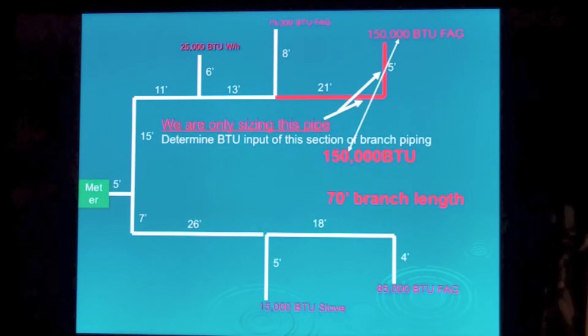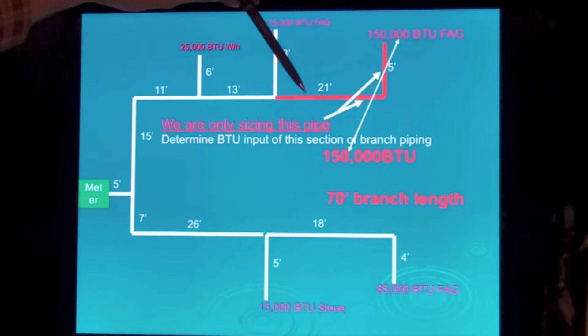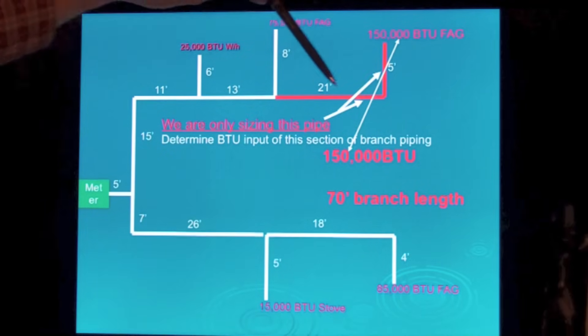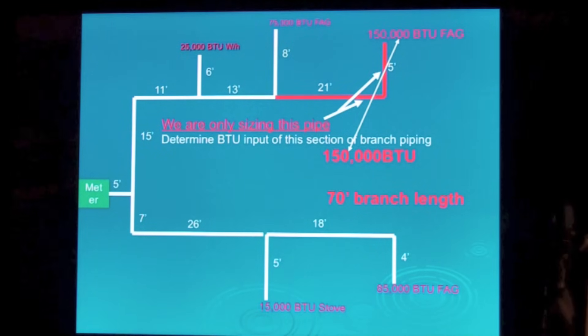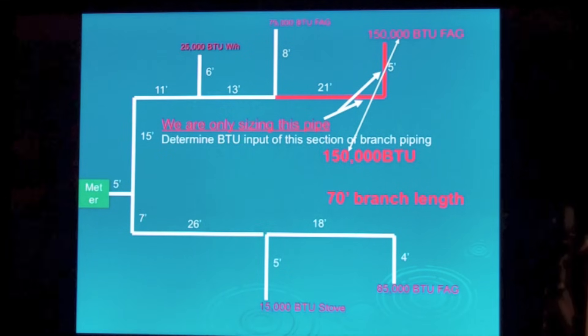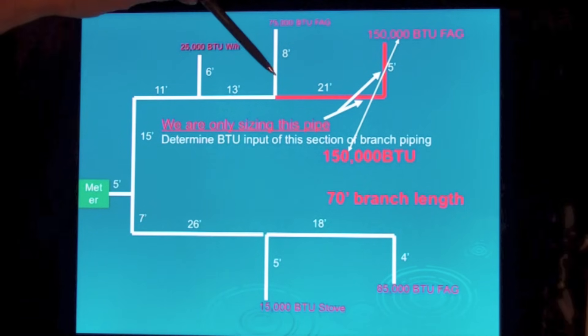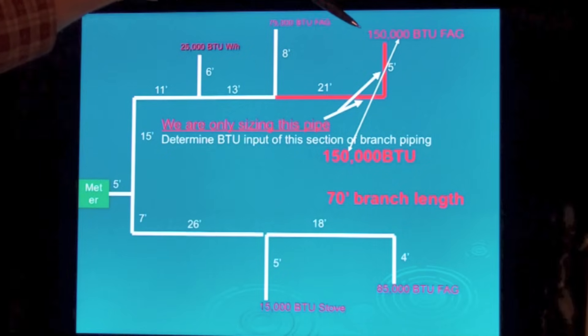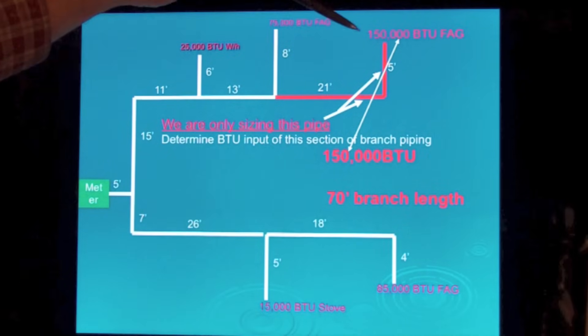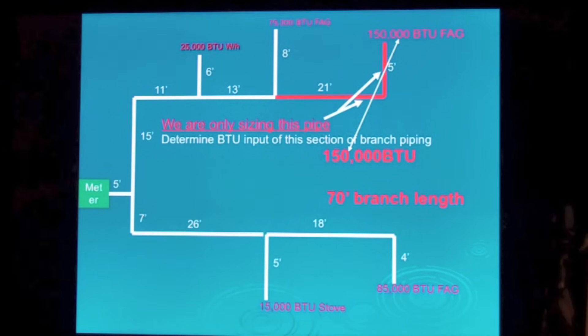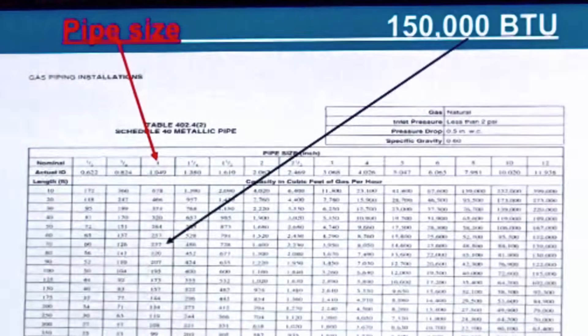Now we're going to size the next one. We're going to size this last piece here and the drop. Drop is just where it comes off the end of the pipe or comes off a tee. The only appliance that is fed by this line is this 150,000 BTU appliance.